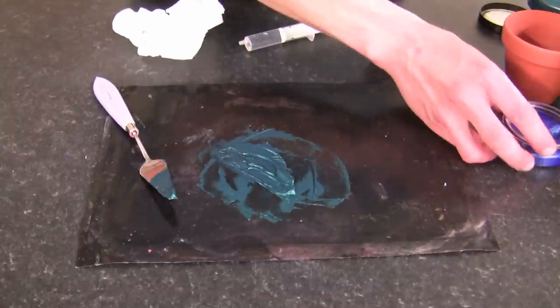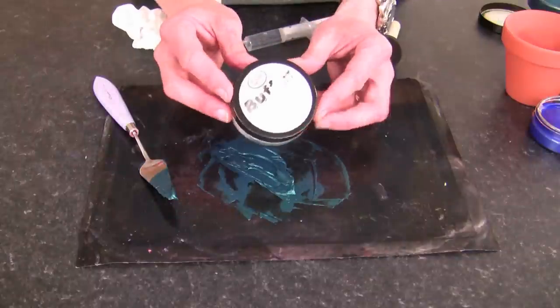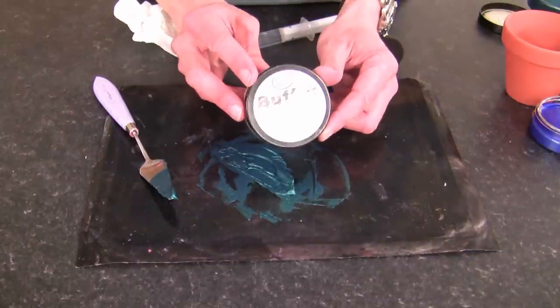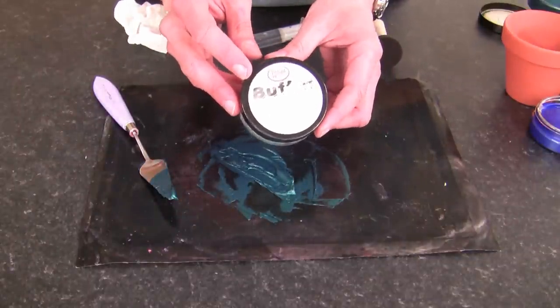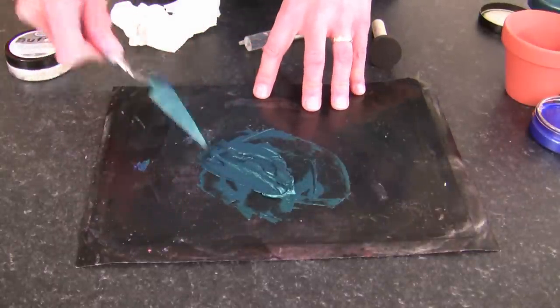Now if you want to lighten that particular color, what you'll need to do is use the Buffet Silver. That basically acts as a white if you were mixing paints. But I think we're quite happy with that particular color.